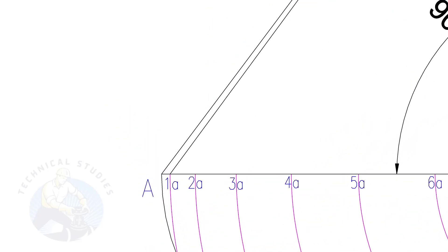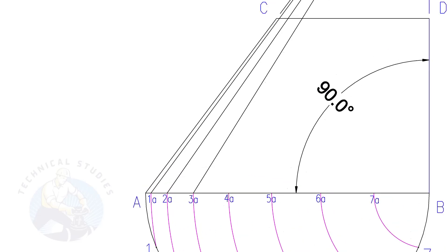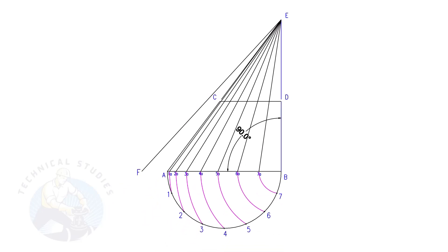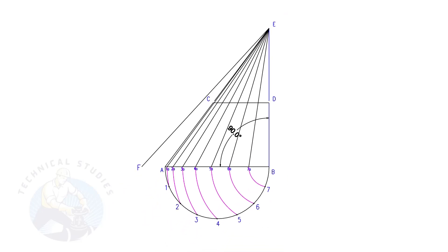Draw lines from 1A, 2A, 3A, etc. to point E. Draw line EF. This is a reference line only.